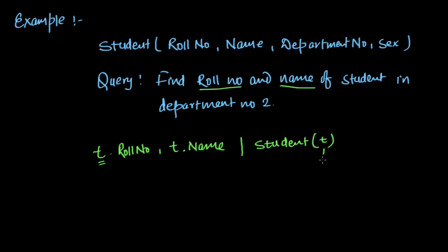So this is our first condition, and it has to be from department number 2. So what we will write: t.DepartmentNo = 2. So this is our tuple relational query.